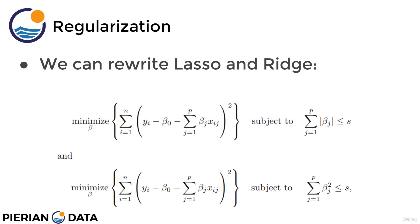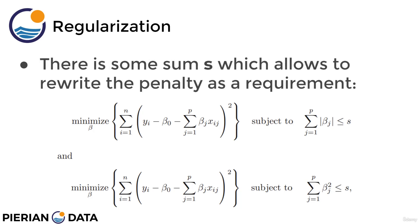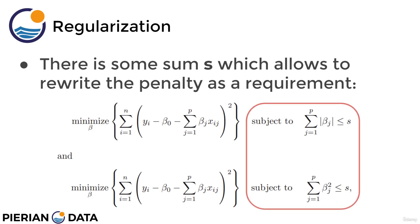We can show that we can rewrite lasso and ridge as equations where we are minimizing the residual sum of squares subject to a condition — and that condition is the penalty term. If you take a closer look at this condition, we can derive that there is some sum s which allows us to rewrite the penalty as a subject-to requirement. For lasso, we minimize RSS subject to the sum of absolute values being less than or equal to s, where s is going to change depending on the set of features you're working with.